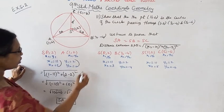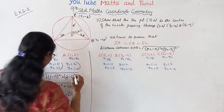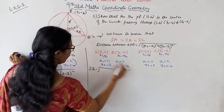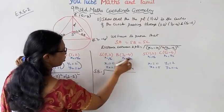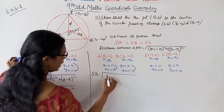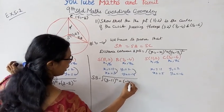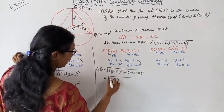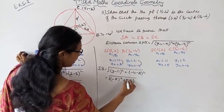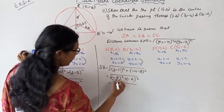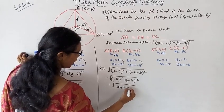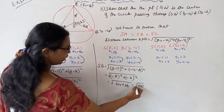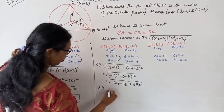Now SB: S is (11, 2) and B is (3, −4). So √((3−11)² + (−4−2)²) = √((−8)² + (−6)²) = √(64 + 36) = √100. Therefore SB = 10.